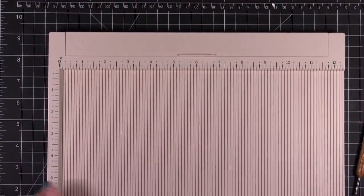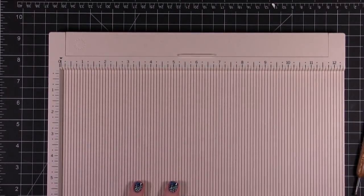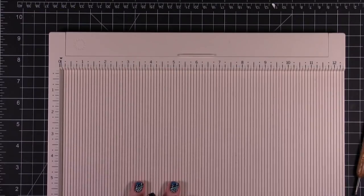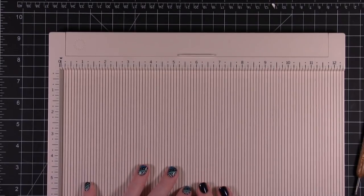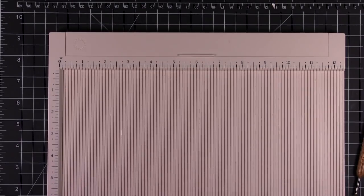It comes with some instructions when you buy the scoring board. Make sure you read through those and follow along in the instructions. You should be able to make envelopes of any size. I hope that helps you guys out. And I will see you guys in the next video. Thanks for watching.